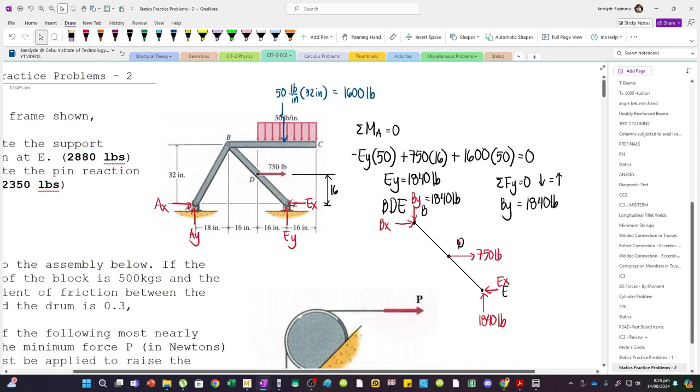And then, since we have BY, we can now take moments about E or B. It depends on you, to get another force. Let me take moments about B, to get EX. So, if this is 16, this is also 16.